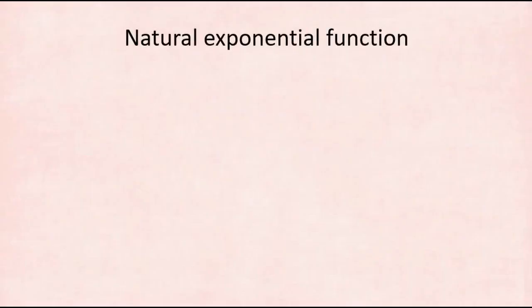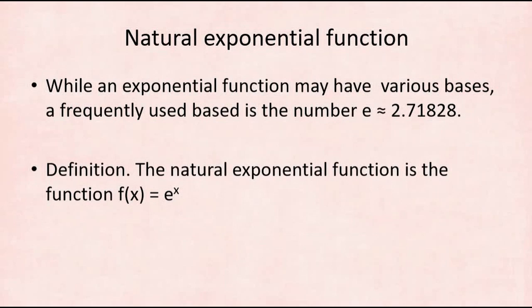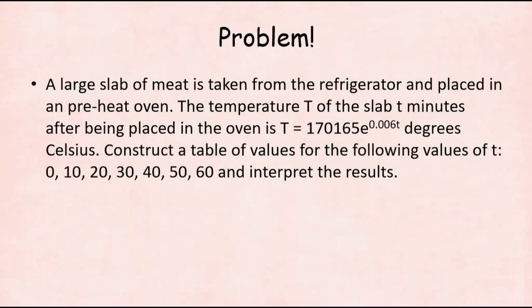Natural Exponential Function: While exponential functions may have various bases, a frequently used base is the number e, which is approximately 2.71828. The natural exponential function is f(x) = e^x. Problem: A large slab of meat is taken from the refrigerator and placed in a preheated oven. The temperature T (in °C) after t minutes is T = 170 − 165 · e^(−0.006t). Construct a table of values for t = 0, 10, 20, 30, 40, 50, 60.